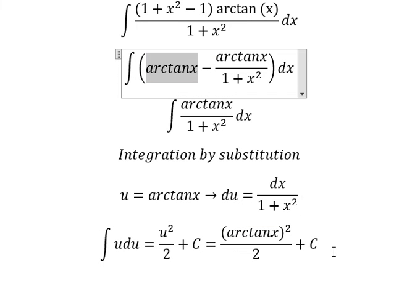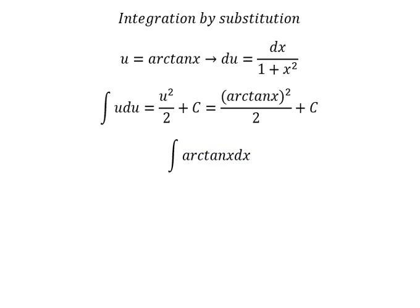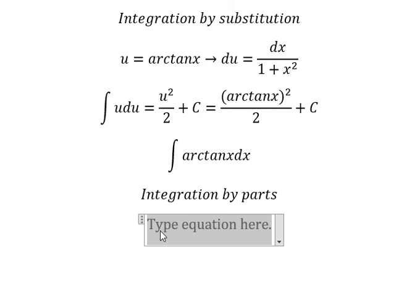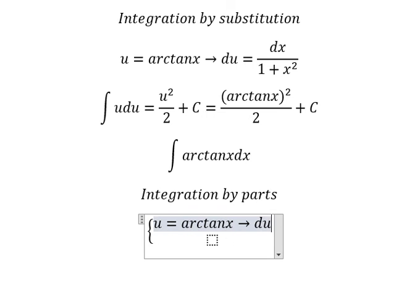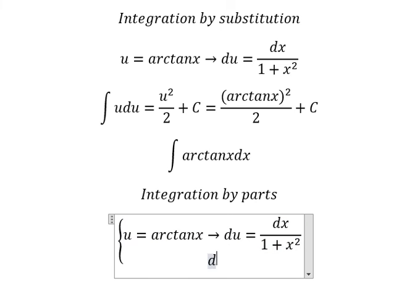Now we go to the second problem. We need to use integration by parts. So we let u equals arctan(x). Then we take the first derivative of both sides, and we have du equals dx over one plus x squared. And we let dv equals dx, so v equals x.